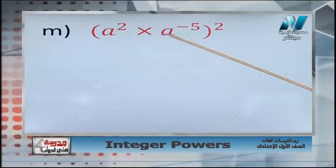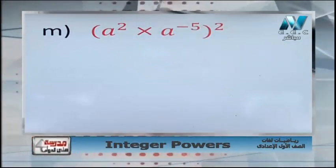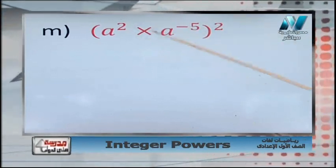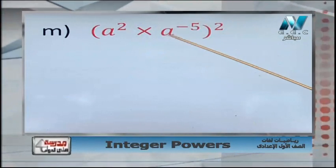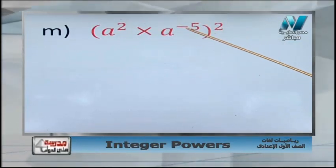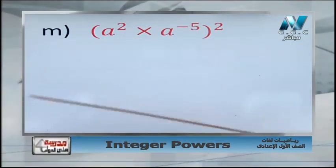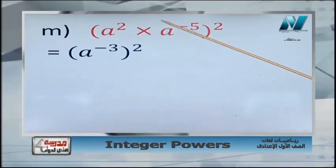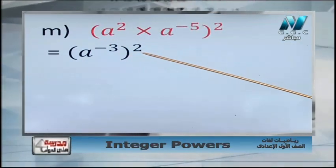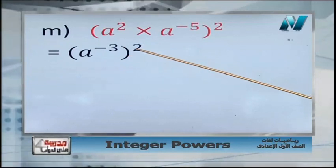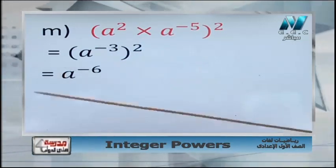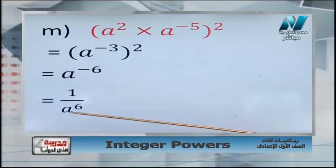Mixed rules example: a power 2 times a power negative 5, all to the power of 2. Start by simplifying inside: same base a, so add the powers — 2 plus negative 5 equals negative 3. Now we have a power negative 3, all to the power 2. Power of the power — multiply: negative 3 times 2 equals negative 6. Then change negative power into positive: a power negative 6 equals 1 over a power 6.